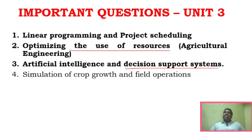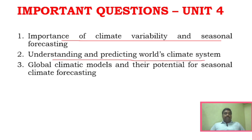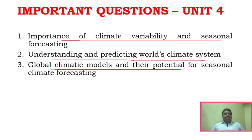Unit 3 also includes simulation of crop growth and field operations. For Unit 4, the important areas are: importance of climate variability and seasonal forecasting, understanding the predictability of the world's climate system, and global climatic models and their potential for seasonal climate forecasting.